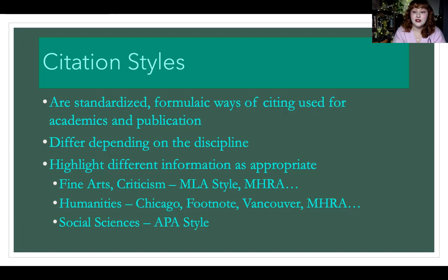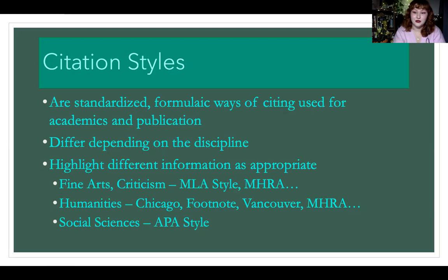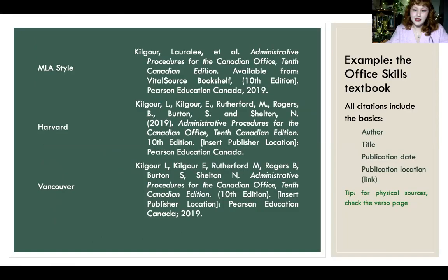MLA prioritizes the author's name and the page numbers — or even line numbers if you're looking at poetry. Whereas humanities styles tend to prioritize the date something was published, because research updates more frequently. Obviously, if you're writing about a classic novel, that novel isn't changing, so you can continue to refer to it without expecting much difference in information. But if you're in something like history or psychology, there are updates in that field all the time, so putting the date in is really important. The style we use at Vancouver Career College is called APA, and we'll go over that in more detail later.